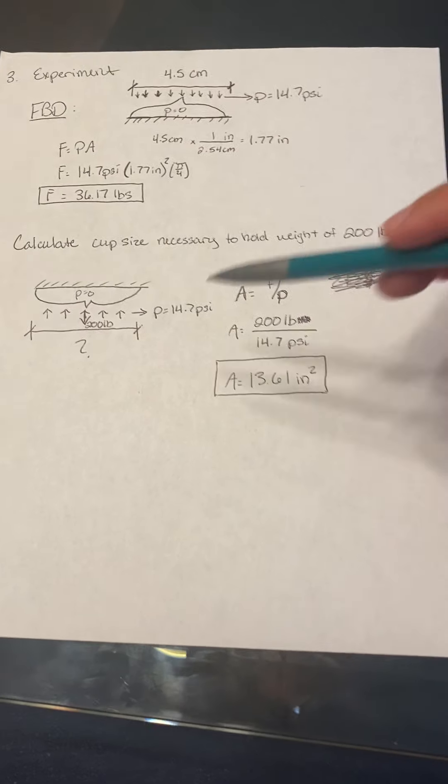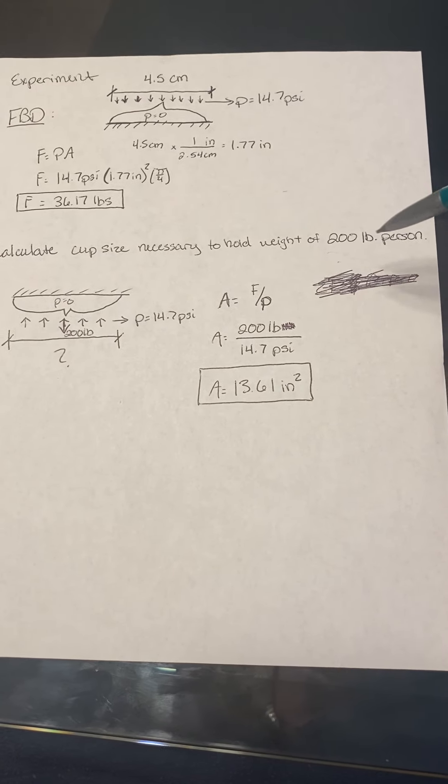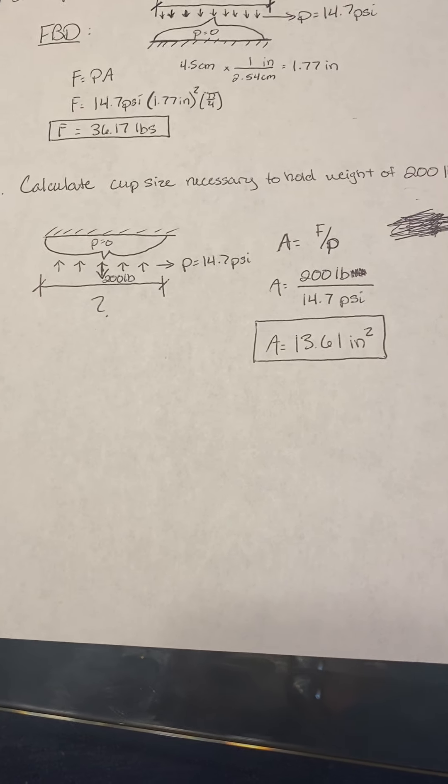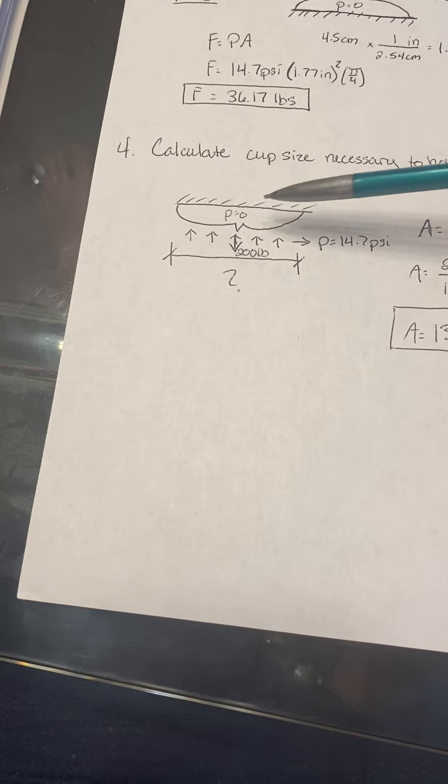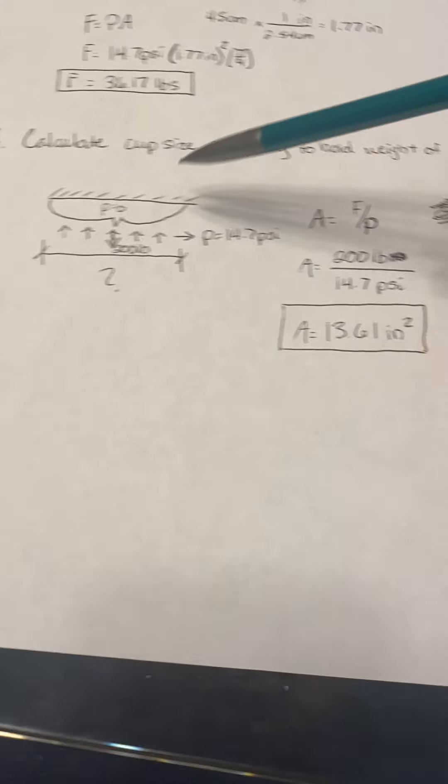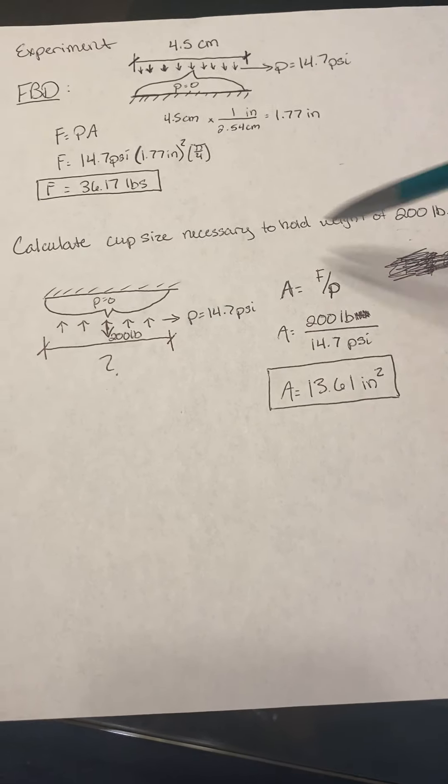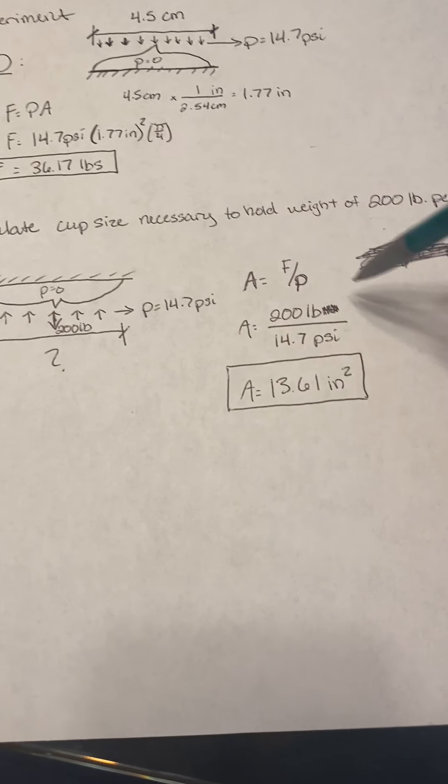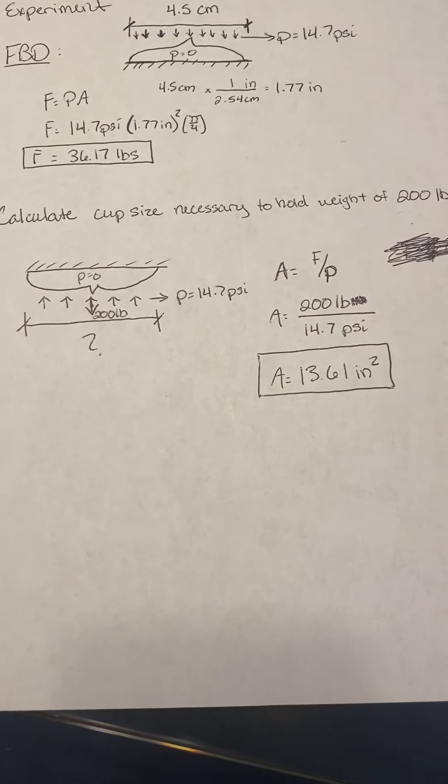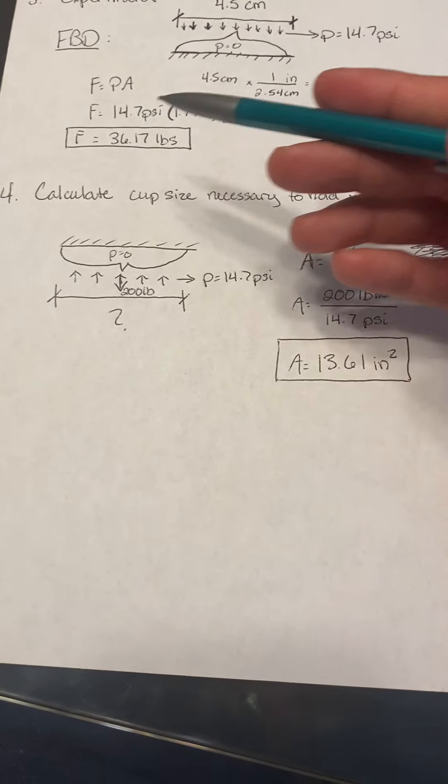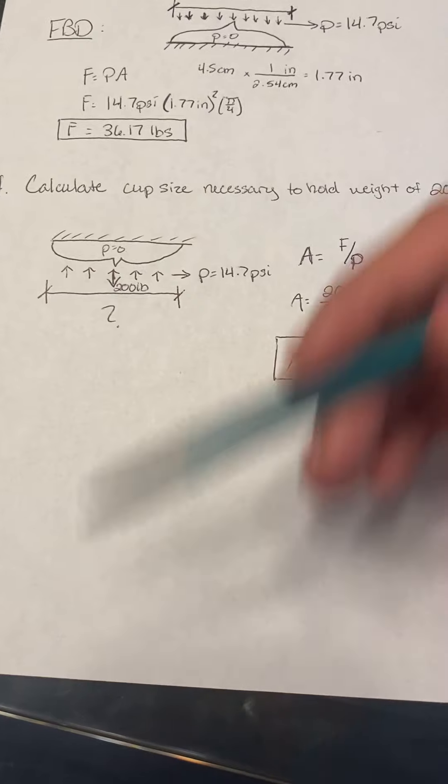The last issue we needed to address was to calculate the cup size necessary to hold the weight of a 200 pound person. Like I said previously, all you need is a free body diagram. The force is acting on the cup. Instead of force equals pressure times area, we're going to do area equals force over pressure. We have a 200 pound person basically pulling on the suction cup.